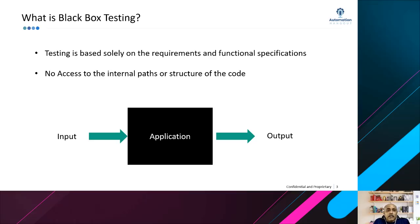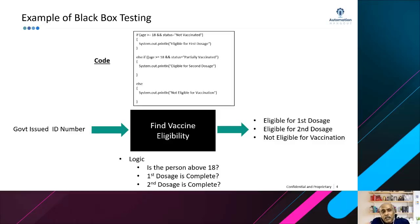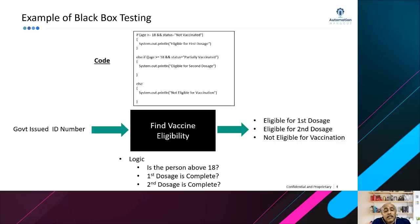Let's take a concrete black box testing example. Assume you have an application that tells you whether you are eligible for vaccines. The basic input is a government-issued ID number — it can be a social security number or another card number. The logic implemented within the application checks: is the person above 18 years old, has the person already taken the first dosage of vaccine, and whether the second dosage is also complete. If you are less than 18 years, or if you have already taken both dosages, you are not eligible for vaccination.